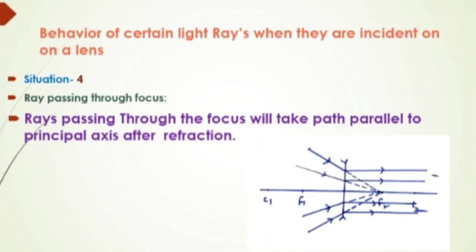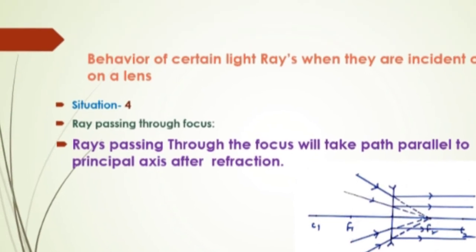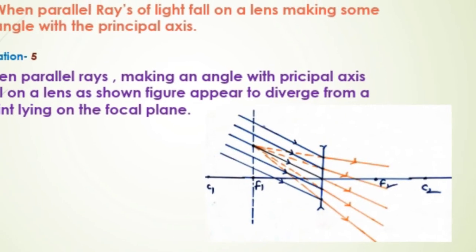Rule 4: Rays passing through the focus will take path parallel to the principal axis after refraction.